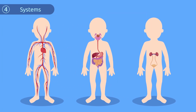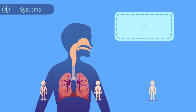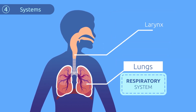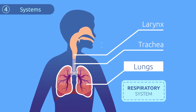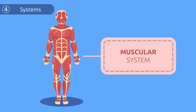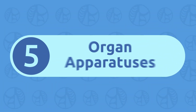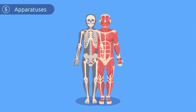Systems are made up of organs that work in a coordinated manner to perform a function. Do you think our lungs would do us any good if we didn't have the larynx or trachea? Of course not — each organ has a function and together they make our body work. For example, the muscular system is made up of muscles.